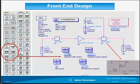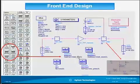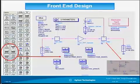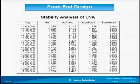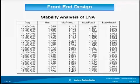In this example I used the stability icons. Once I simulate, the results are shown automatically: stability factor, stability measure mu, and mu prime. The tabulated results show that mu, mu prime, and stability factor are all greater than one, and the stability measure is positive.